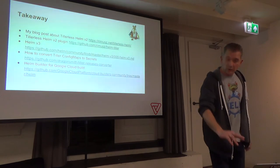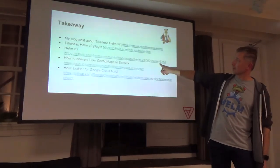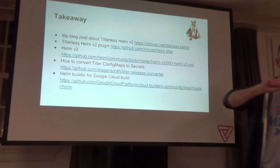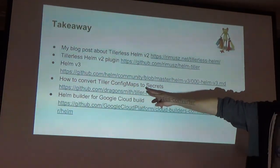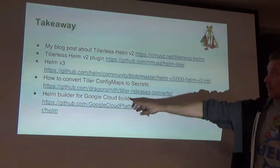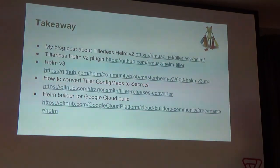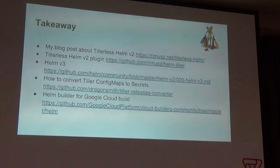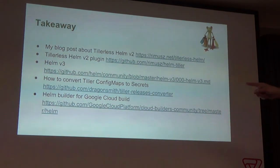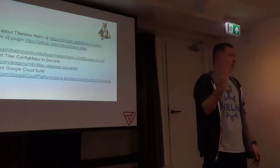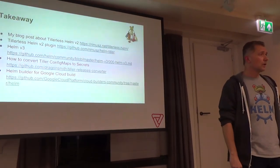Is there an easy way to go from a classical Helm install to a Tillerless install? Yes. My blog post, Tillerless plugin, Helm 3 — somebody interested. Good thing: somebody wrote code to convert Tiller config maps to secrets. Run that — it's converted to secrets, even in a different namespace. You can copy secrets easily. And afterwards, that's it — run Tiller tillerless.